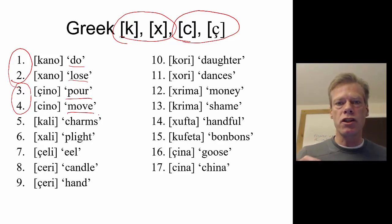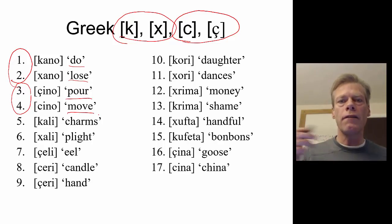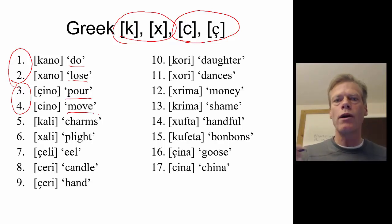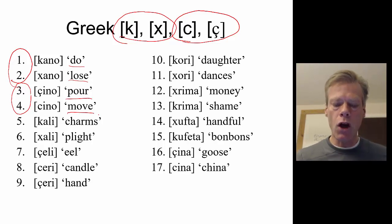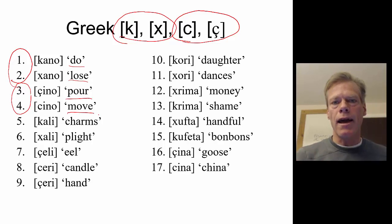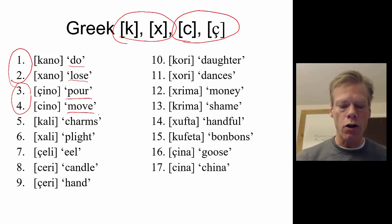Now the question is whether the velars and the palatals are allophones of different phonemes, or if there is some sort of complementary distribution that explains when we get a velar and when we get a palatal. To investigate this, we want to look at the environments, starting with what follows each sound.